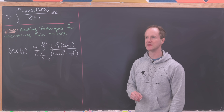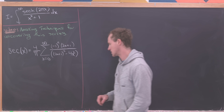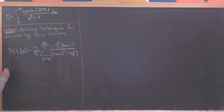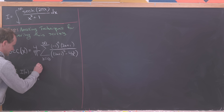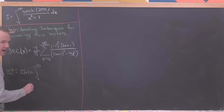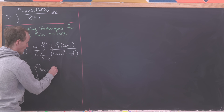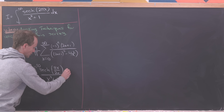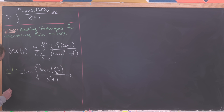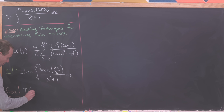We're going to use the technique of generalization — looking at a slightly more general integral and then evaluating at a specific value. So let's set I(α) equal to the integral from 0 to infinity of sech(πx / 2α) over x² + 1 dx. Our goal is I evaluated at 1/4, which recovers the original integral.